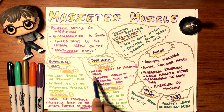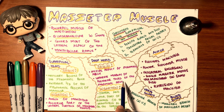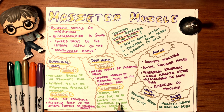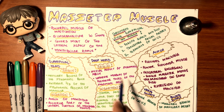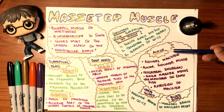The deep head originates from the medial part of the zygomatic arch — specifically the inferior margin of the posterior third. Its insertion is into the upper part of the ramus of the mandible, as high as the coronoid process, right underneath the insertion of temporalis, leading down to the angle of the mandible.